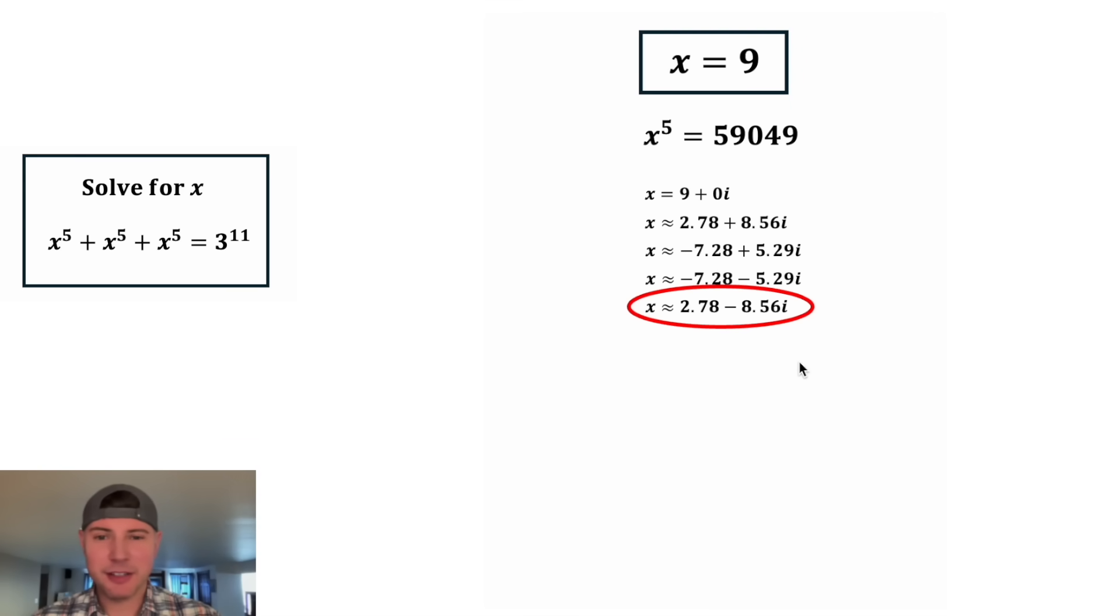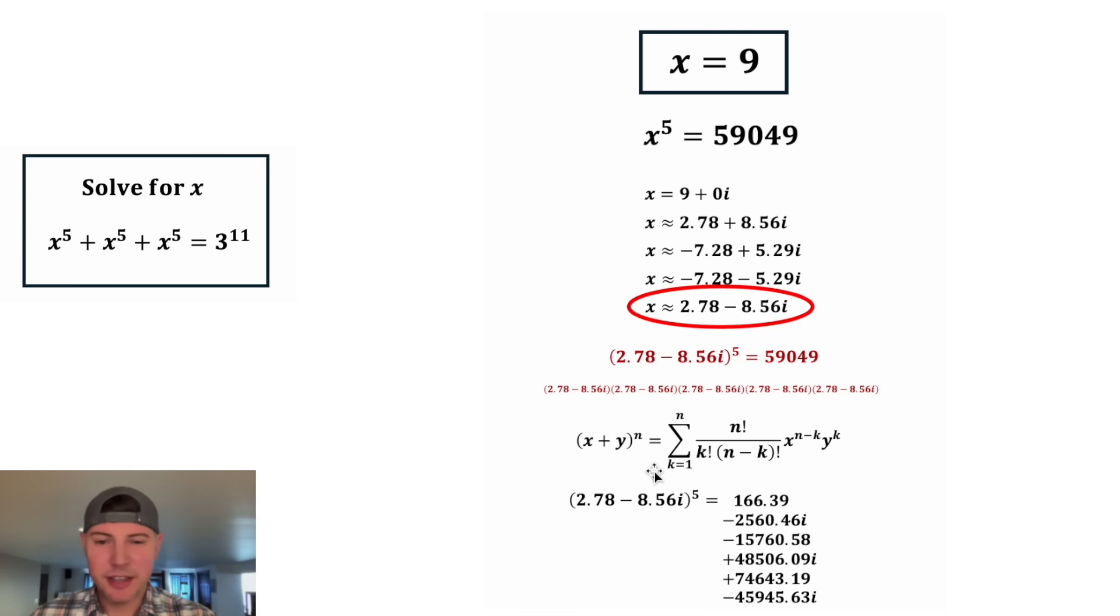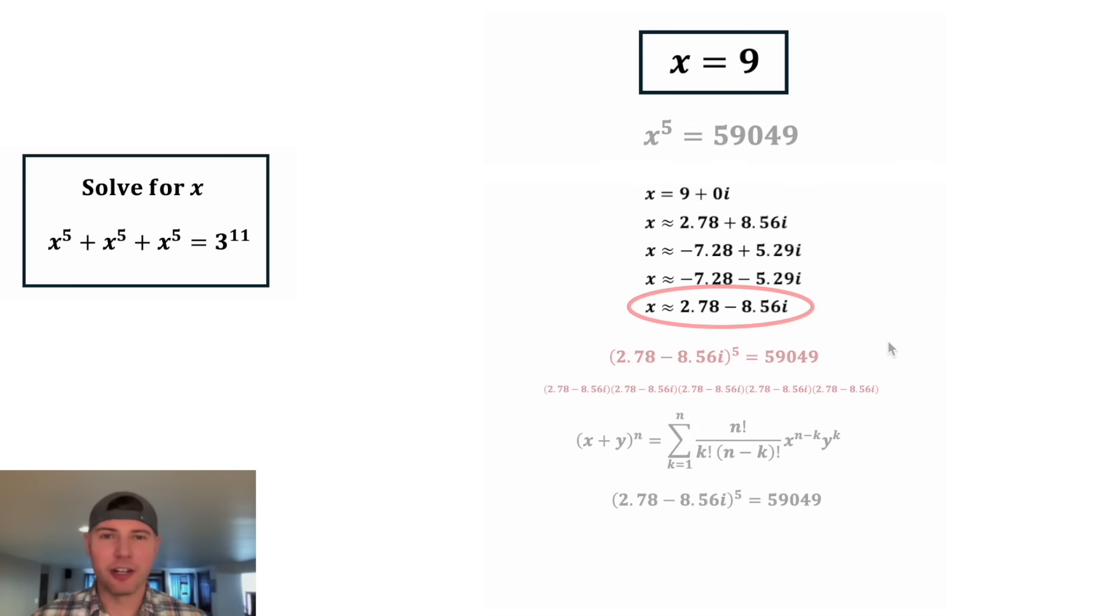Before we finish, let's check this one real fast. Ultimately we want to show that this minus this to the fifth power equals 59,049. One thing we could do is literally multiply it out five times, but nobody has time to do that. So we're going to do it a different way. We're going to use the formula for binomial expansion. If we take our 2.78 minus 8.56i to the fifth and expand it using this formula, I'm not going to make you guys go through all the work but I did it all. This expanded is these six terms added together. And it works out that all the imaginary portions subtract each other away, and then all the real portions are going to add up to give us 59,049. So this one checks out and they're all going to check out.